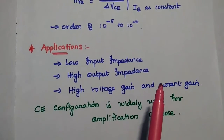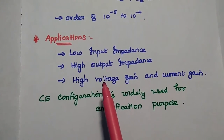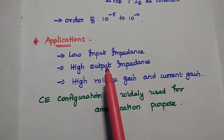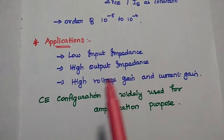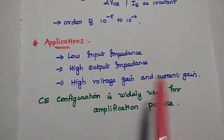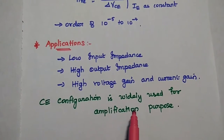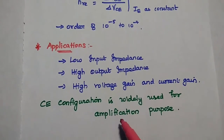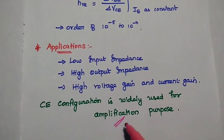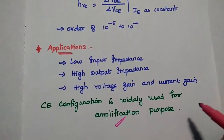Finally, we can conclude that since the CE configuration has low input impedance, high output impedance, and high voltage gain and current gain, it is widely used for amplification purposes — mainly audio amplification. We can use the CE configuration for these applications. Thank you.